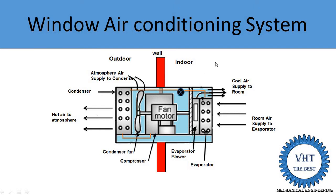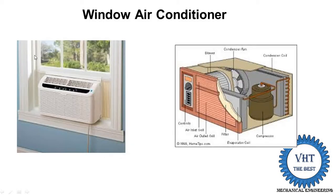First I show you an image of where the window air conditioning is installed. This is the space or unit where the window air conditioning is installed. It is mounted on the window, that's why it is known as the window air conditioner. It requires a certain space on the window, which is why it has that name.